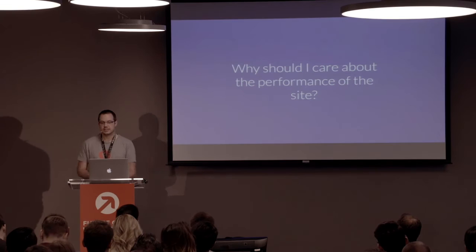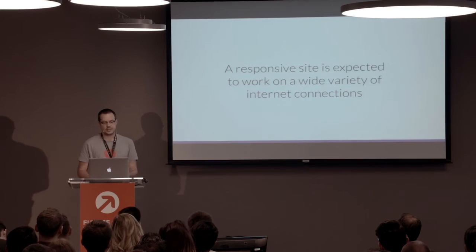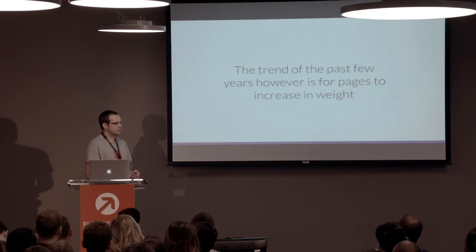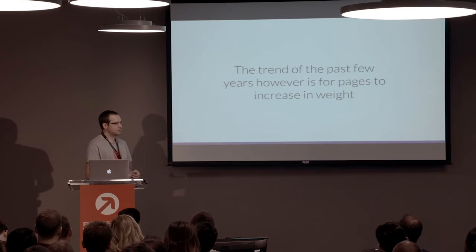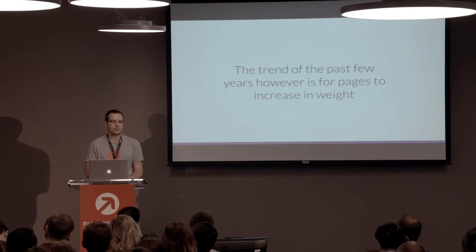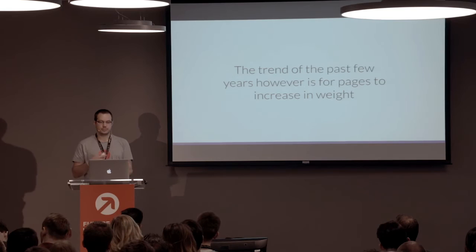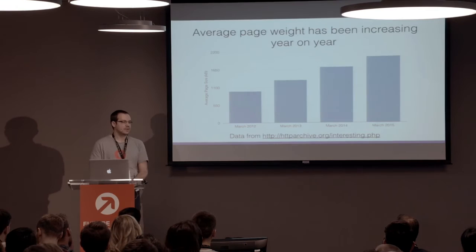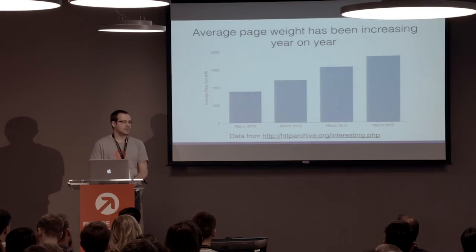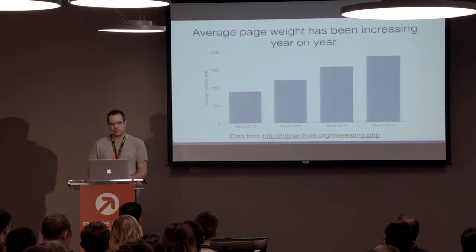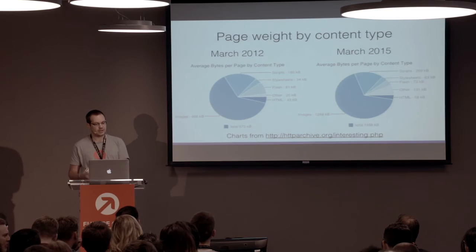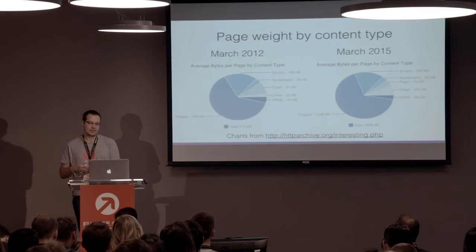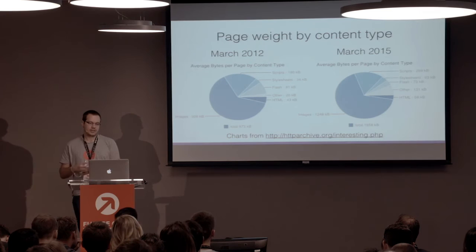Why should you care about the performance of your site? A responsive site is expected to work on a wide variety of internet connections — a user could be on a gigabit connection in an office, or loading your site on a 2G connection in the countryside. One trend I've been seeing is that pages are increasing in weight — we're using more CSS, more imagery, more JavaScript for better interactive experiences, but this all has a cost. The average page weight has increased year on year: in 2012 it was 973 kilobytes, but by March 2015 it's 2,008 kilobytes — an increase of 106%. Breaking that down by content type, we see a drop in Flash and a bigger increase in images, but generally everything has increased at the same rate.